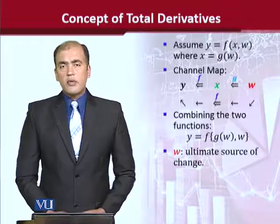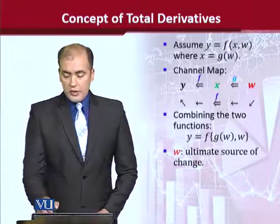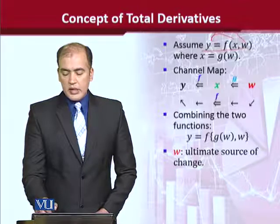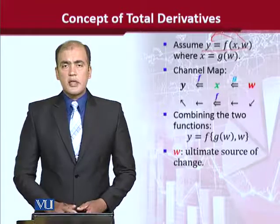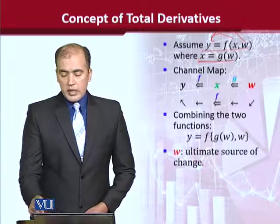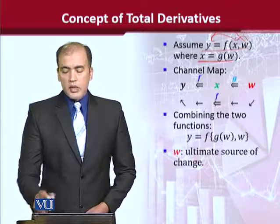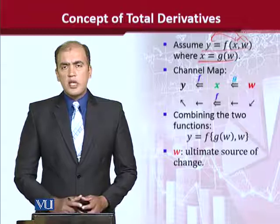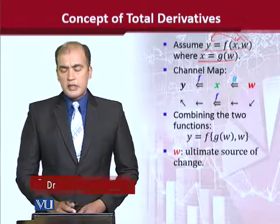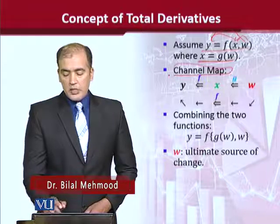To understand this, we need to understand a functional form. We assume that y is dependent upon x, and w also determines y. Additionally, x depends upon w, so there is a kind of chain in this process. Let us try to understand this with the help of what we will call a channel map.